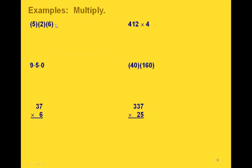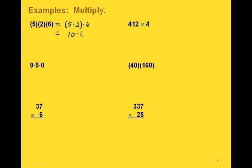Here are some different examples of just doing multiplication. In this first one we actually have three different numbers. We can group this any way we'd like to. Let's multiply the 5 times the 2 first: 5 times 2 gives us 10, and then 10 times 6 gives us 60.